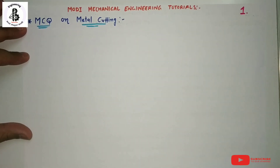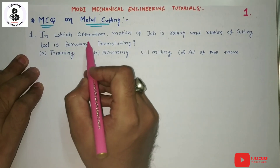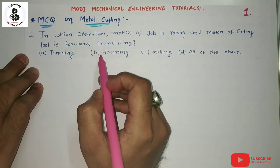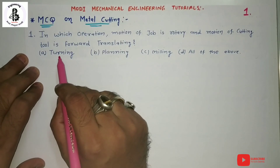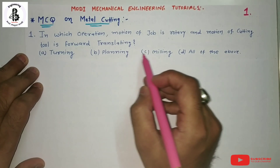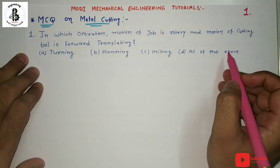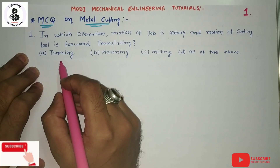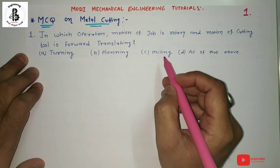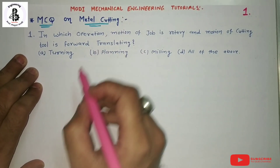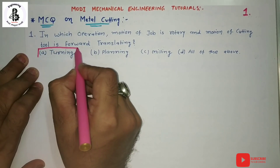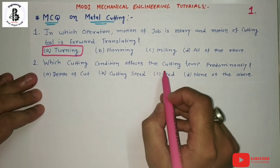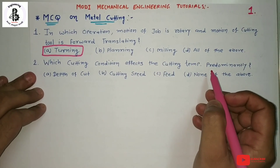First question: In which operation is the motion of the job rotary and the motion of the cutting tool forward translating? The options are: turning operations, planning operations, milling operations, and all of the above. In the case of turning operations on a lathe machine, the motion of the job is rotary and the motion of the cutting tool is forward translating. So the answer is turning.